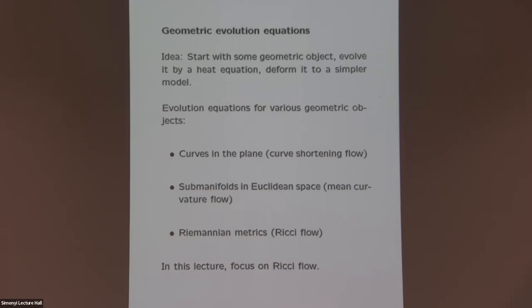There are many different versions of this where we consider different geometric objects. The simplest case is a curve evolving in the plane, giving what's called the curve shortening flow. An extension of that is mean curvature flow, where we evolve sub-manifolds in Euclidean space, or more generally in a Riemannian manifold. The most important is Ricci flow, which I want to focus on today.